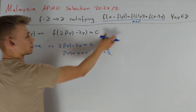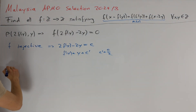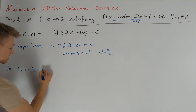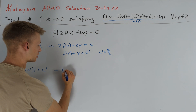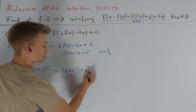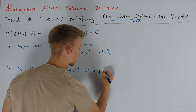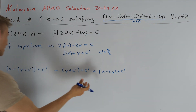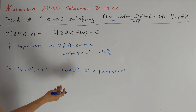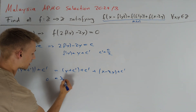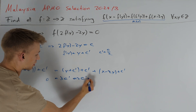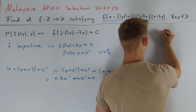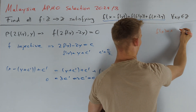Plugging f(y) = y + c' into our original functional equation, we get on the left-hand side x - y + c' + c', and the right side equals y + c' + c' + x - 2y + c'. We see that the x and y terms cancel, leaving 0 = 3c', which implies c' = 0. Moreover, if c' = 0 then this is a valid solution. So we have found our first solution: f(x) = x for all integers x.